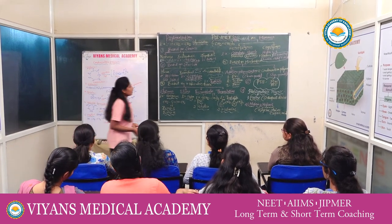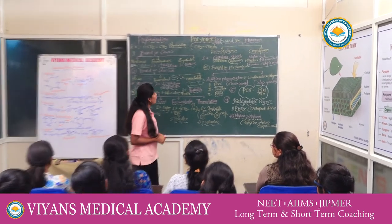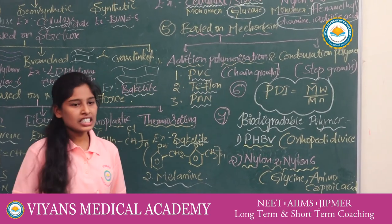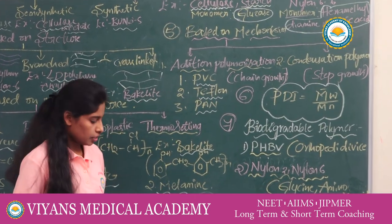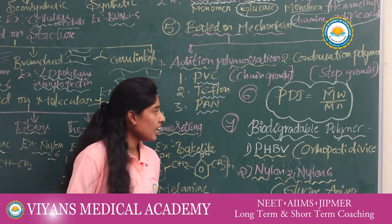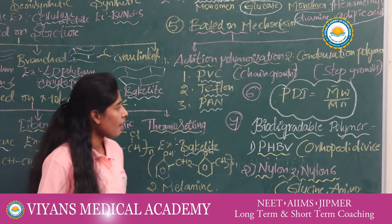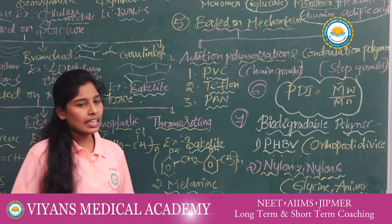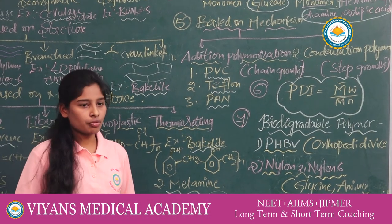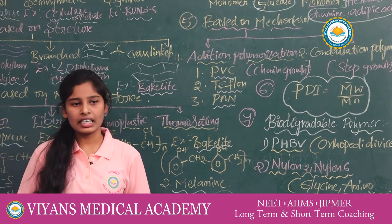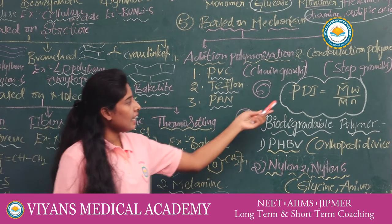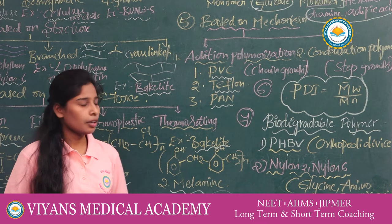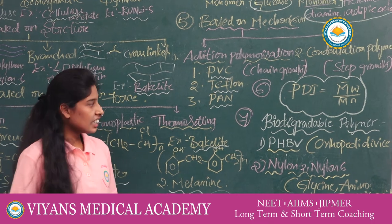The polydispersity index, or PDI, is the weight-average molecular mass divided by the number-average molecular mass. If PDI equals one, the polymer has more homogeneity and is a natural polymer. If PDI is greater than one, it has less homogeneity and is a synthetic polymer.